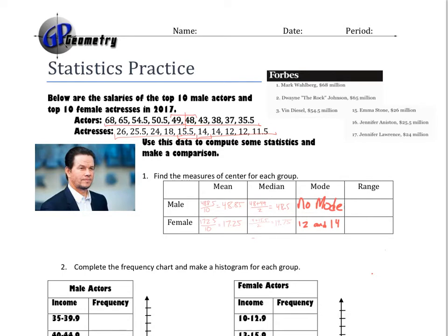For the range, we take the largest minus the smallest. For males: 68 minus 35.5 gives us 32.5. For females: 26 minus 11.5 gives us 14.5. So those are our measures of center — mean, median, mode — and range tells us how spread out the data are.